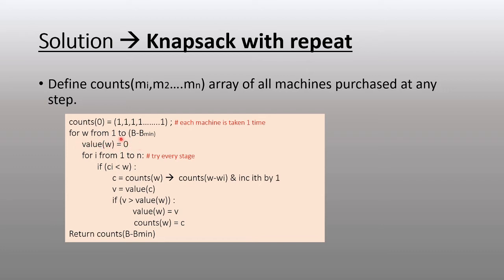For any given budget point, we start off with zero, then iterate over all possible machines. If that machine fits in our extra budget, if the cost of that machine fits in the extra budget...